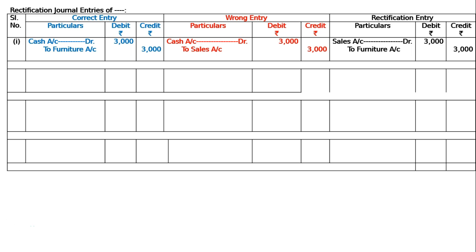Error two — sales book added short by five thousand. The correct entry is debtors account debited to sales account, say eight thousand. The wrong entry posted was debtors account debited to sales account three thousand only, meaning sales account was posted five thousand less than it should have been.